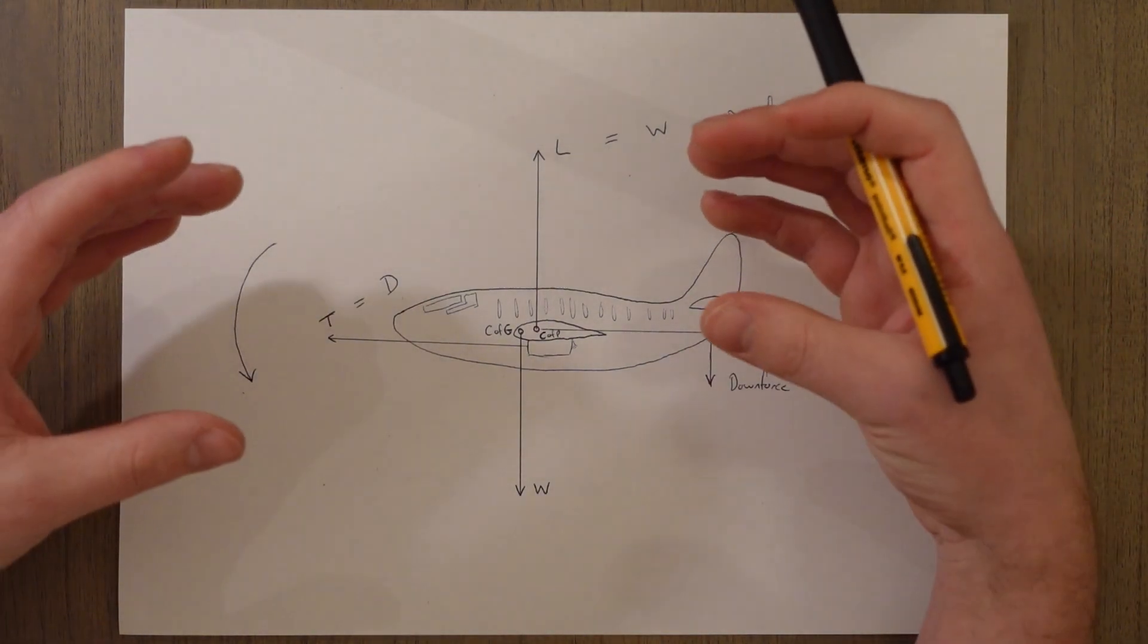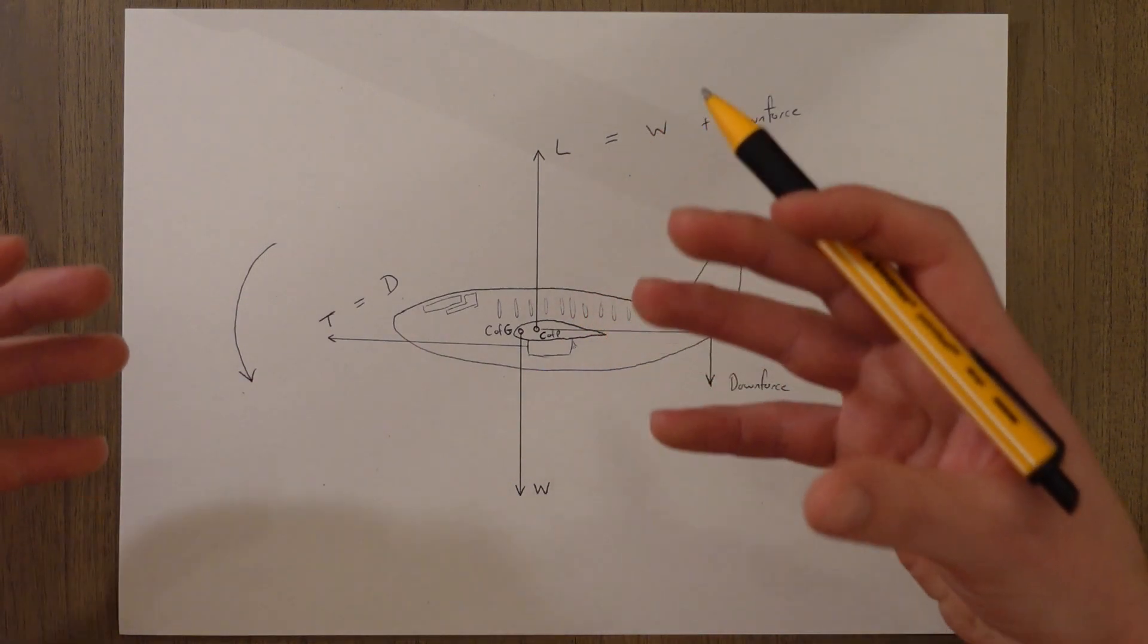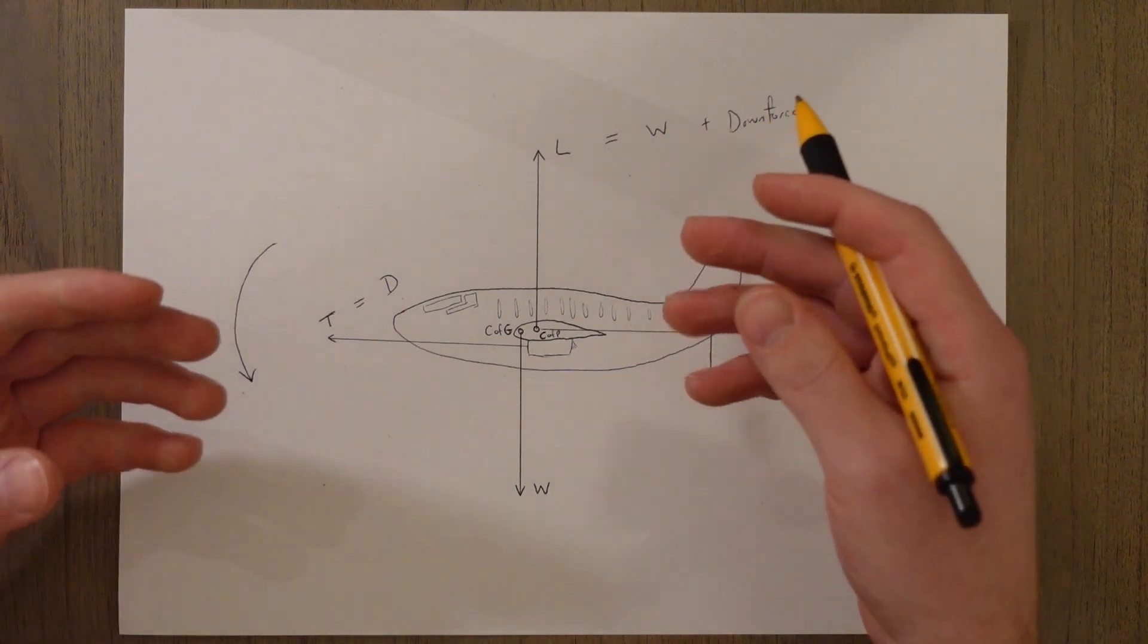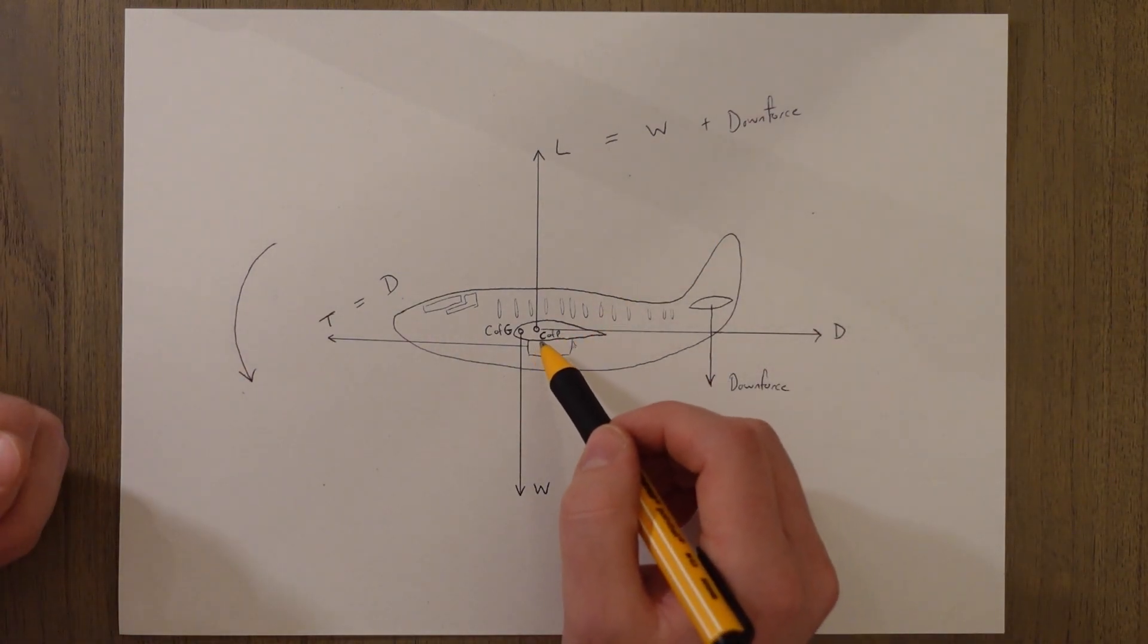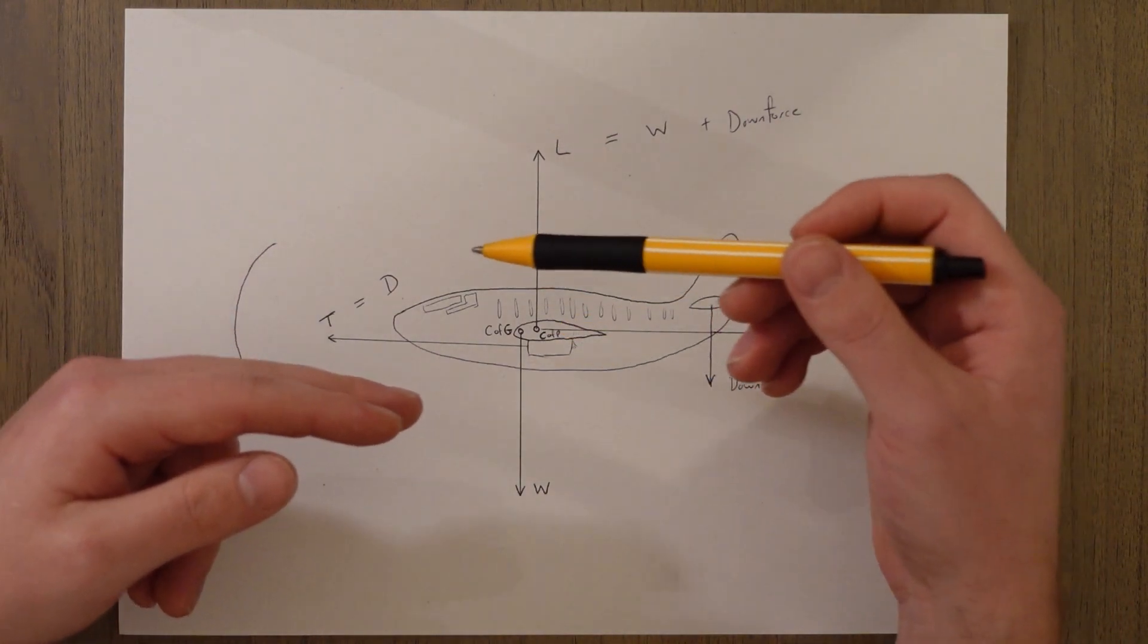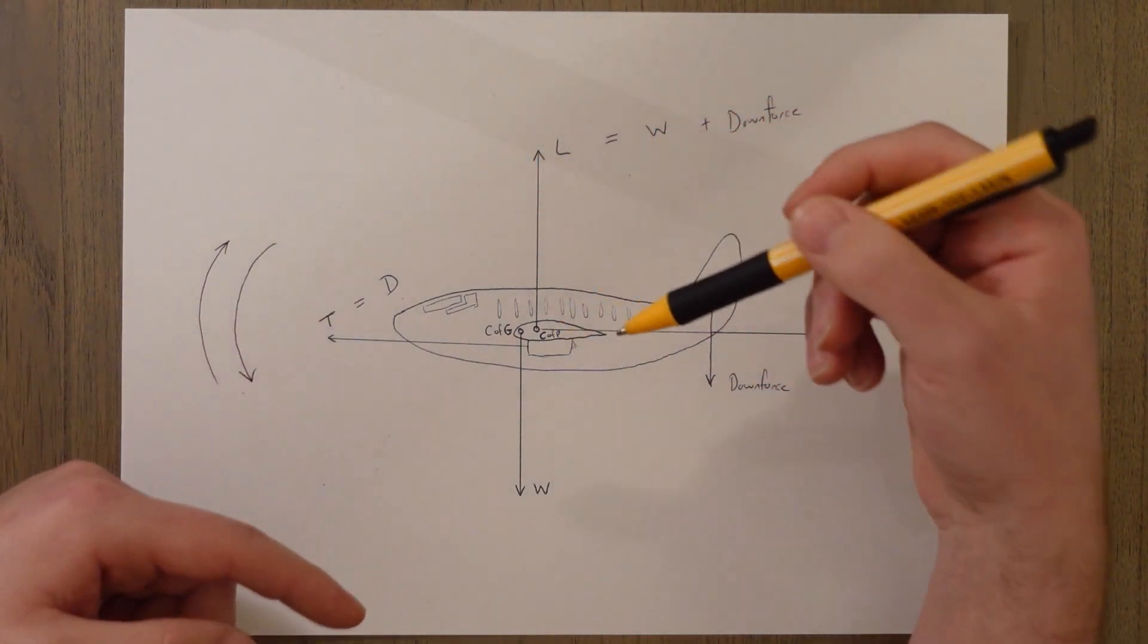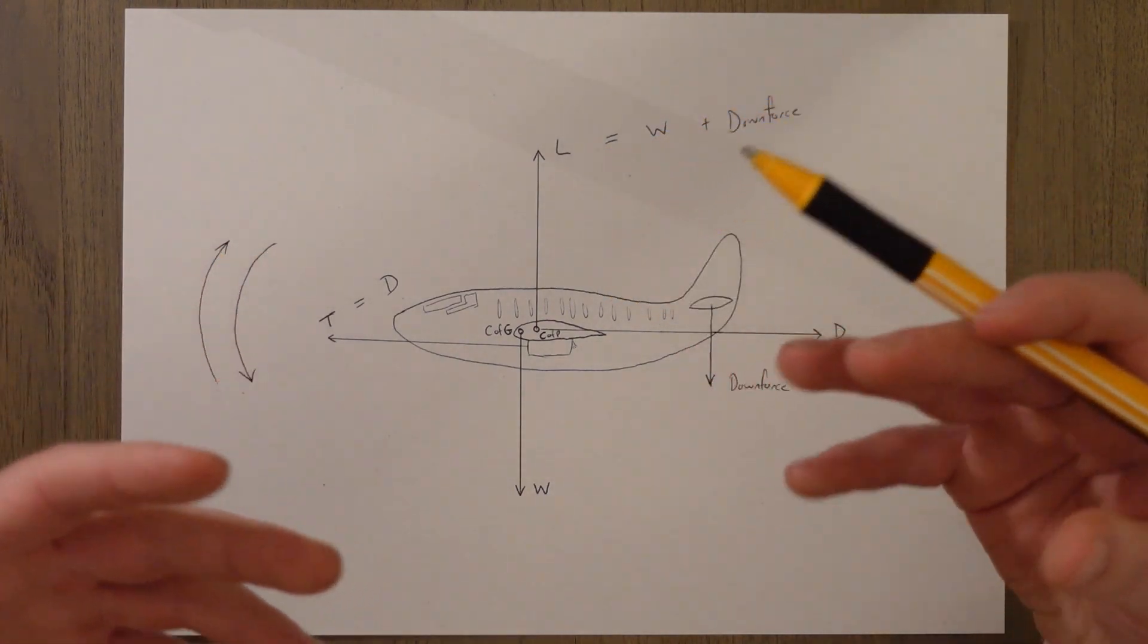In most modern jet aircraft the engines are mounted below the wings meaning that the thrust acts slightly below the center of pressure and the center of gravity. Because the engines are below this point, we have a moment arm and a couple that creates a nose up rotation. This helps to counteract some of the moment caused by the lift weight couple and we would need less downforce at the tail as a result. This is partly why this is such a common setup for airliners.